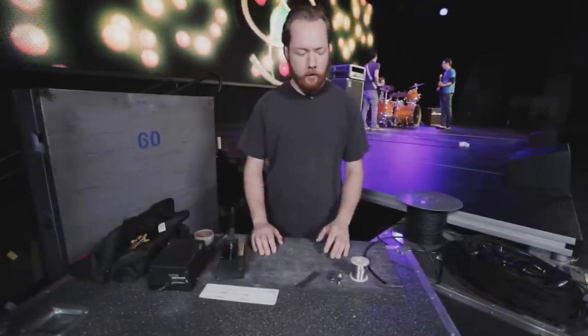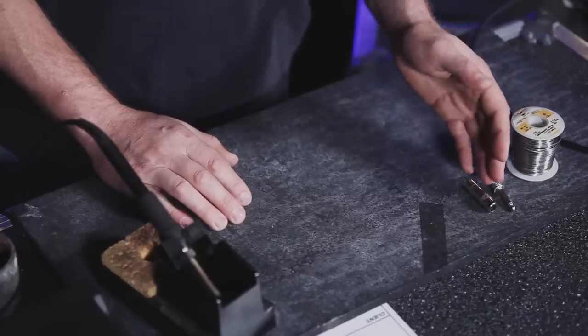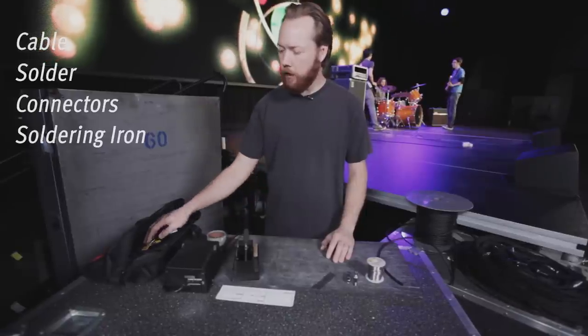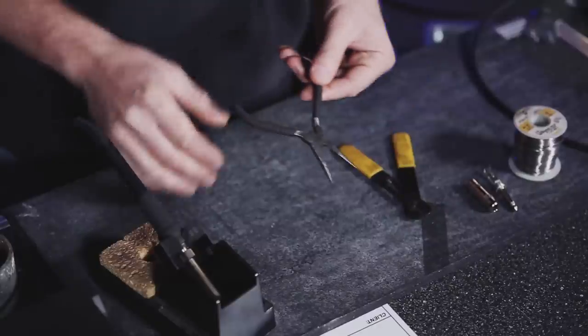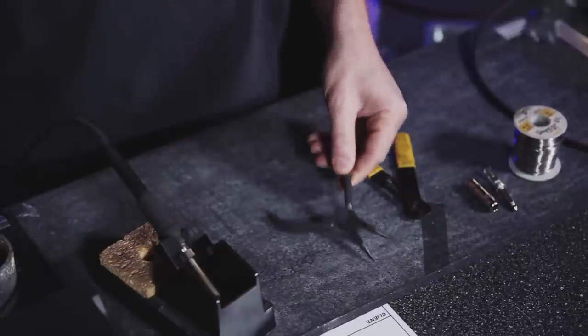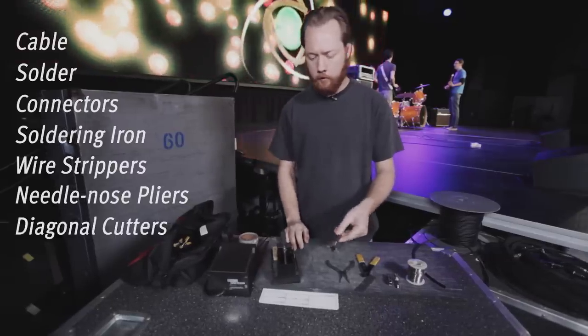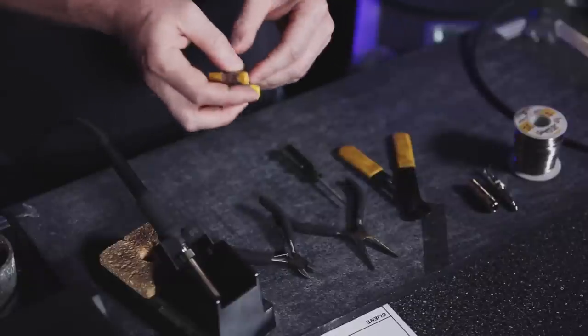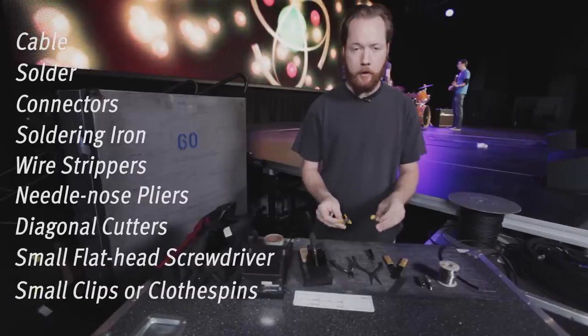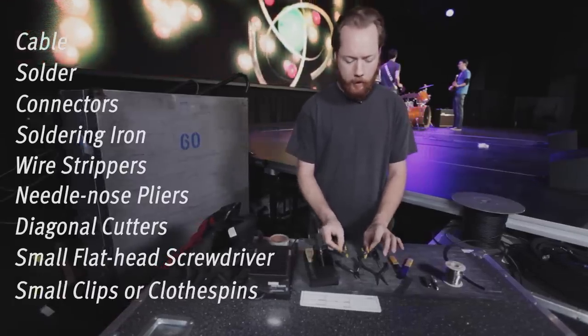A few of the items that you'll need include cable, solder, and connectors, of course a soldering iron, wire strippers, needle nose pliers, diagonal cutters or side cutters, and a small flathead screwdriver. It's also handy to have a few clips or clothespins around to keep the connectors and cable in place as you solder.